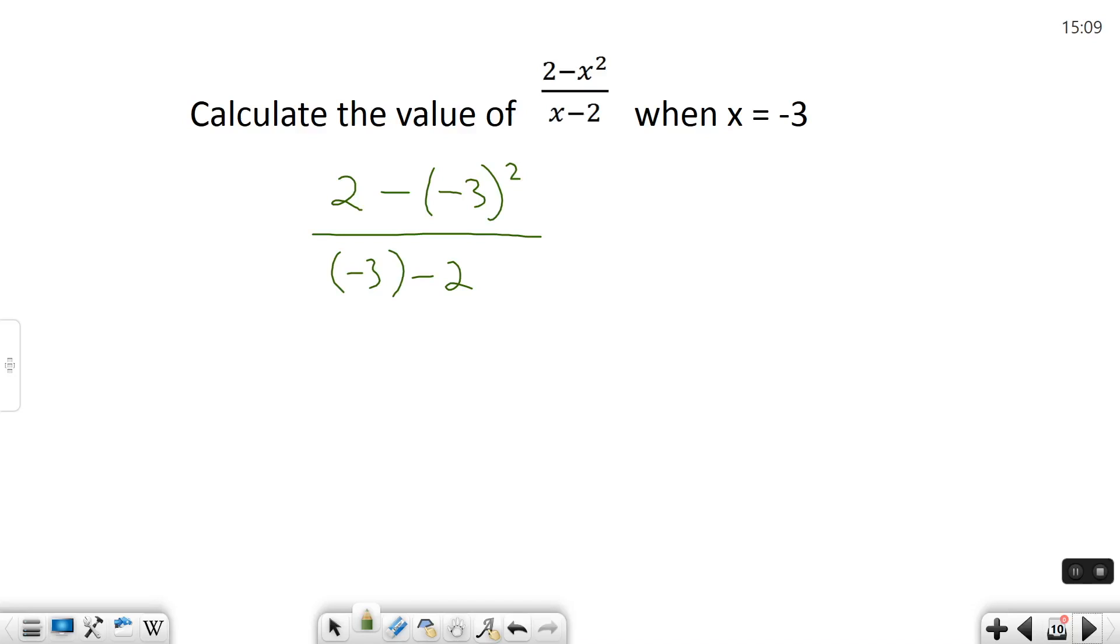Now we can start evaluating it and calculating this value. Order of operations says you can do parentheses and then exponents. So we have 2 minus 9, because negative 3 squared is 9. On the bottom, we're just going to do negative 3 minus 2, which is negative 5.